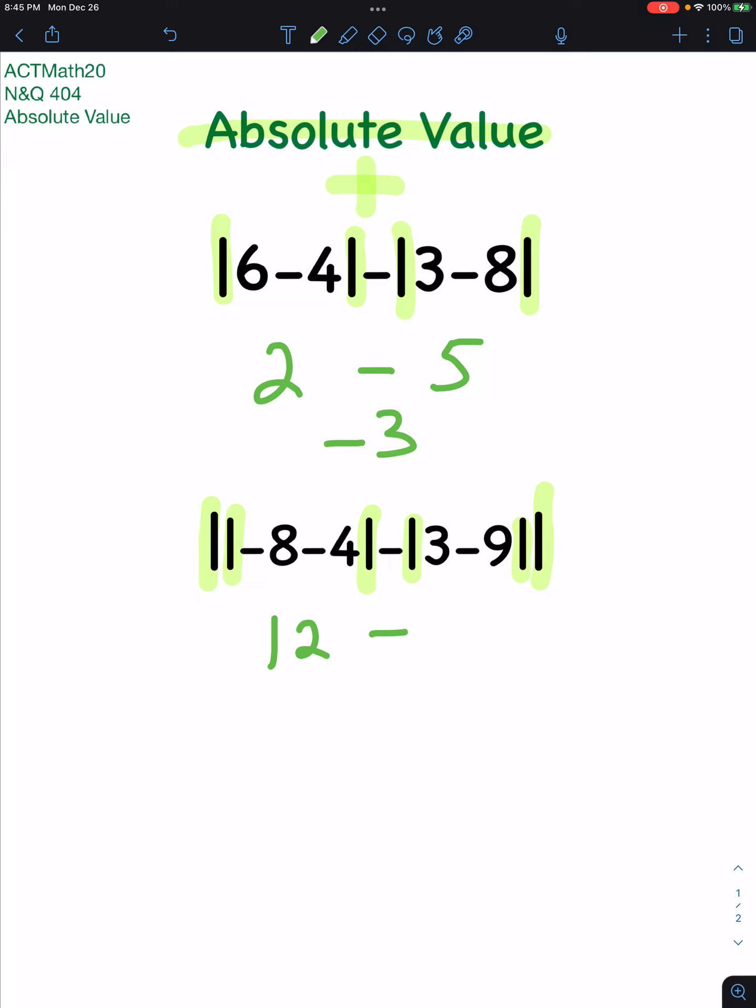3 minus 9 is a negative 6, but coming out of those lines, it's positive. And the absolute value of 12 minus 6, well, that's the absolute value of 6, which is 6.